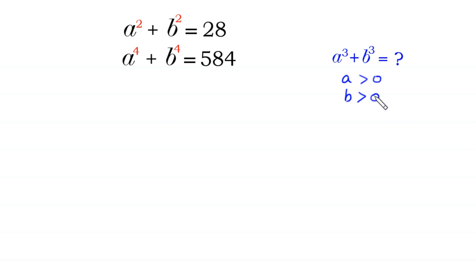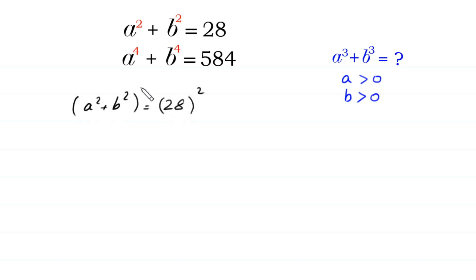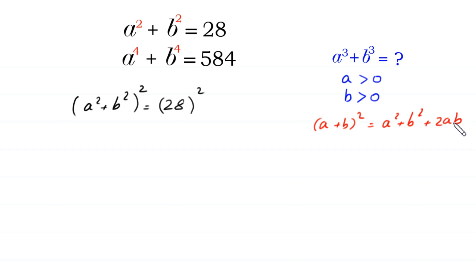First, we take the square of both sides of the equation a² + b² = 28. According to the algebraic identity, (a + b)² = a² + b² + 2ab, we get (a² + b²)² = a⁴ + b⁴ + 2a²b².